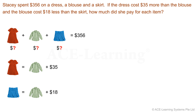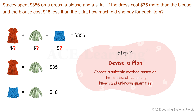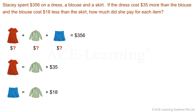The problem is made much clearer now with the diagram. Let's proceed to Step 2: Devise a plan. Choose a suitable method based on the relationships among known and unknown quantities. The costs of the three items are compared with each other, and the differences in costs are given. So we can draw a comparison model to illustrate the relationships among the three quantities and use it to solve the problem.